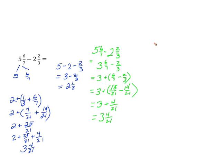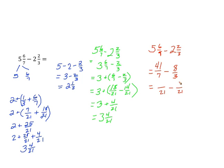Now we'll do this the third way. Our original expression is five and six-sevenths minus two and two-thirds. With this technique we change our mixed numbers into improper fractions. Five times seven is thirty-five, plus six is forty-one — as you can see we're starting to work with some bigger numbers. And two times three is six, plus two is eight, so we have forty-one-sevenths minus eight-thirds. Our common unit is still twenty-one. Forty-one-sevenths becomes one hundred twenty-three twenty-firsts, and eight-thirds becomes fifty-six-twenty-firsts.